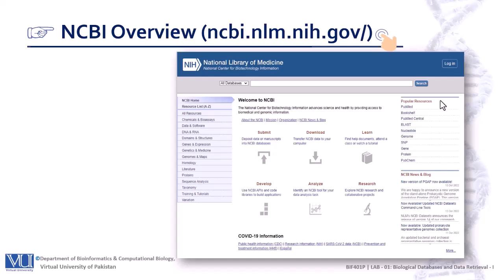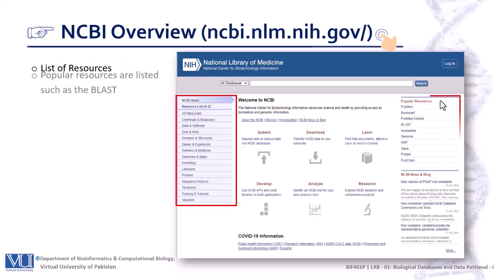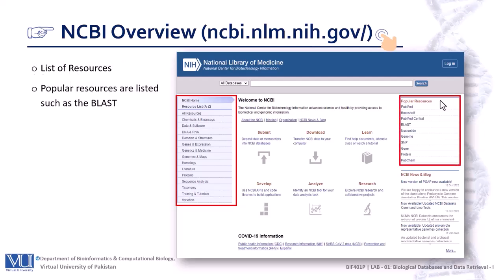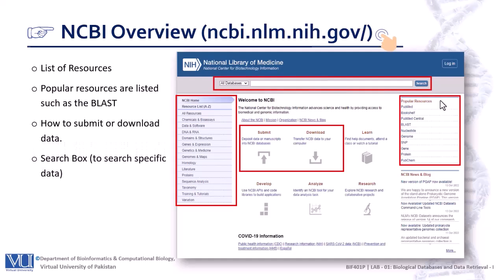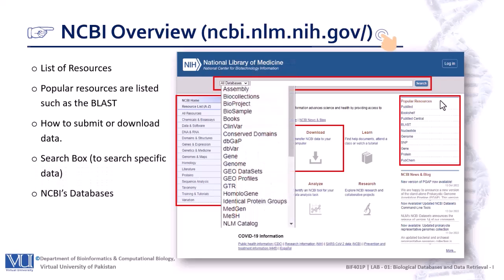On the left side of the homepage, you will find a detailed list of resources that you can access. On the right side of the main page, some of the most popular resources are listed, such as BLAST or PubMed. In the center of the page, you find information about how to submit or download data. If you are interested in a specific gene or protein, you need to use the search box. To the left of this search box, there is a drop-down menu with a list of all databases available for your search.